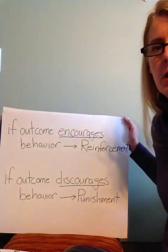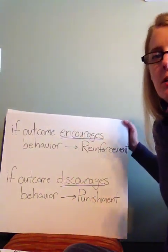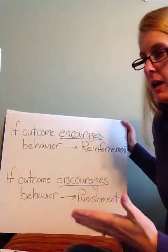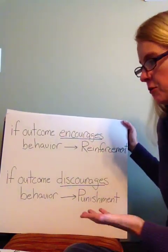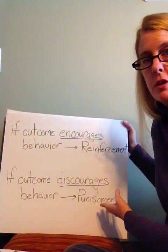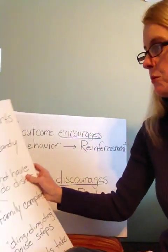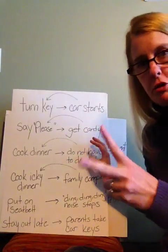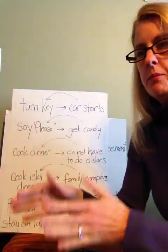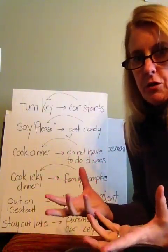The first part of the label is to identify it as a reinforcer or a punisher. When you look at the outcome of any particular behavior, ask yourself: is that outcome going to encourage me to do this again in the future? If so, label it reinforcement. Or is this outcome going to make me less likely to do that behavior in the future? If so, call it punishment. Every example is going to get two letters — we'll call it either positive or negative, and then R or P for reinforcement or punishment.